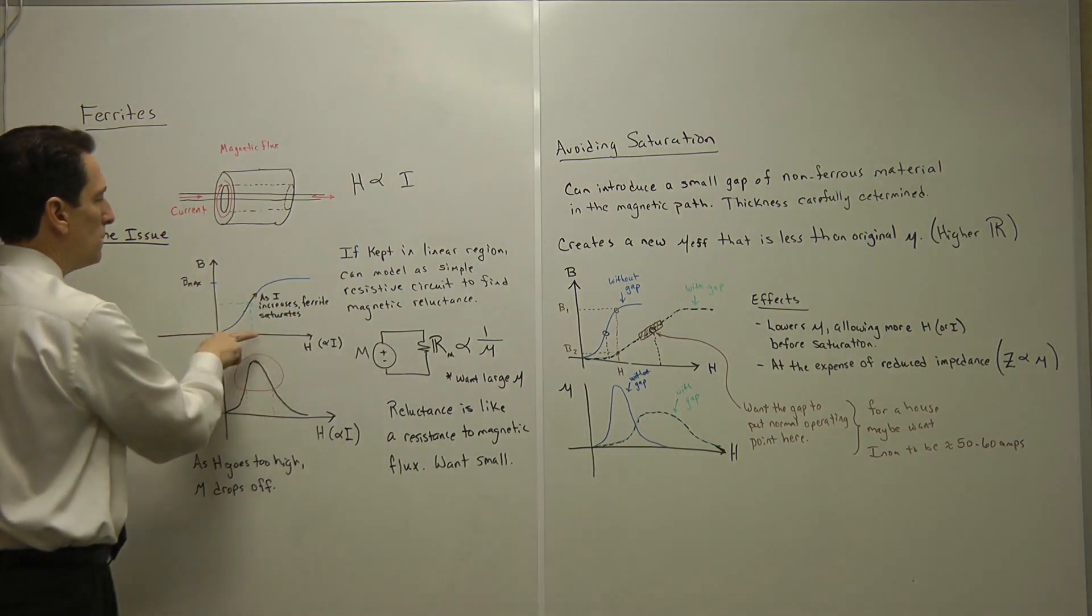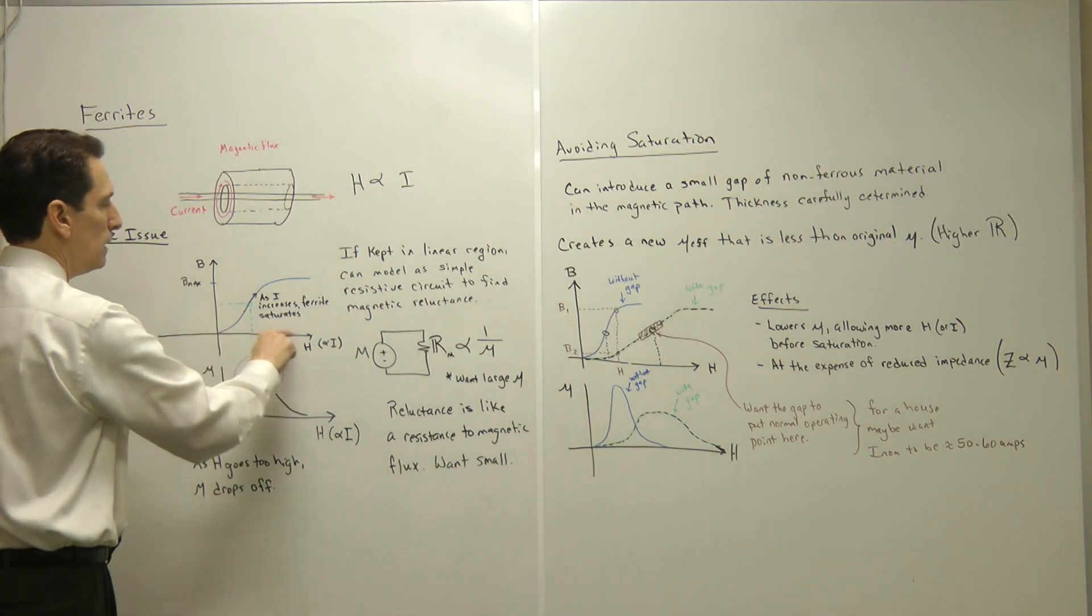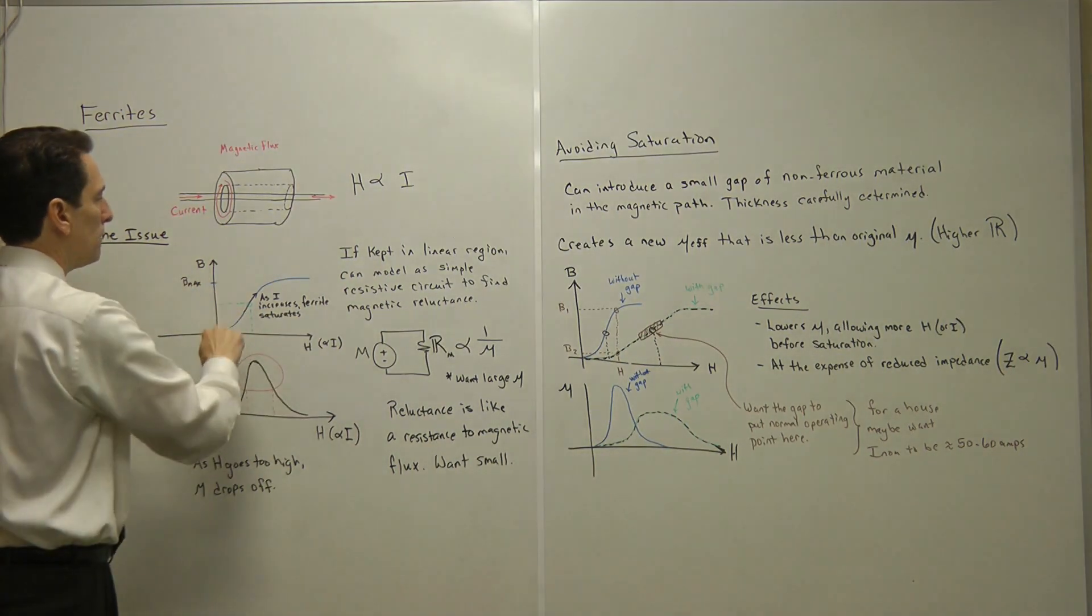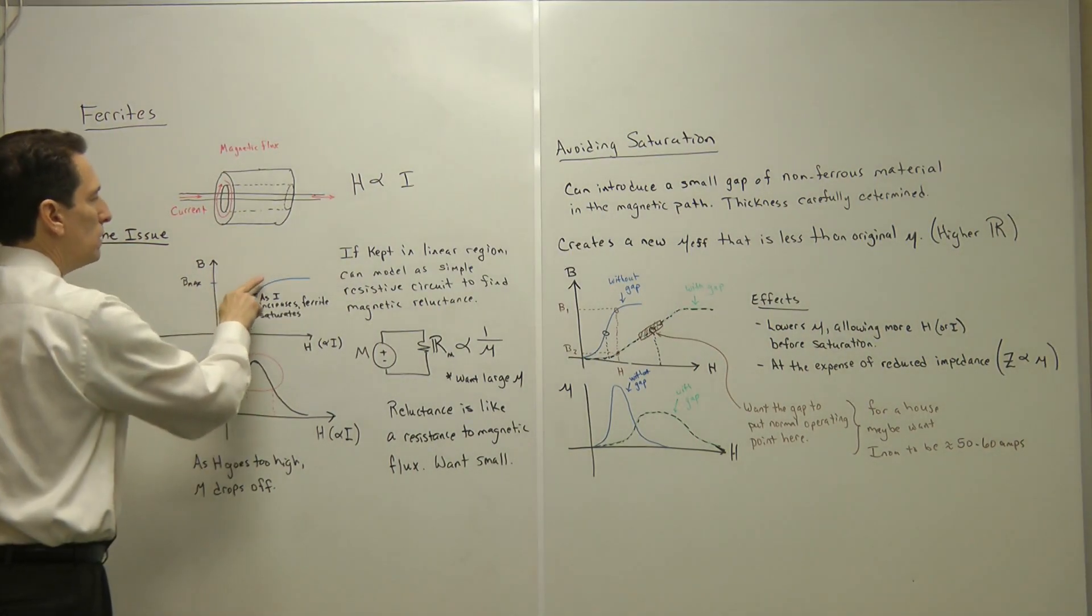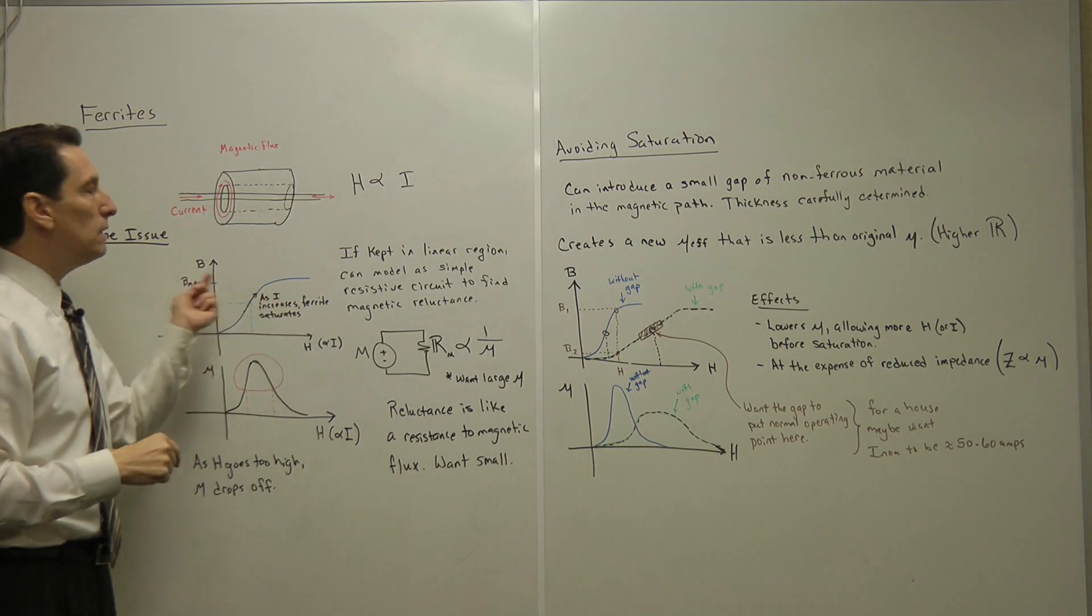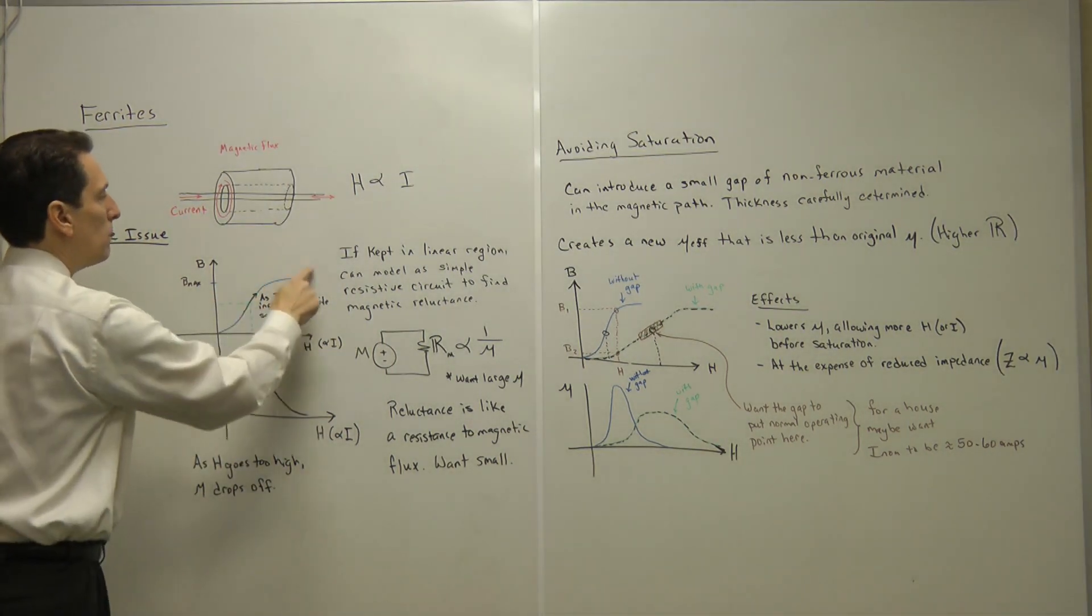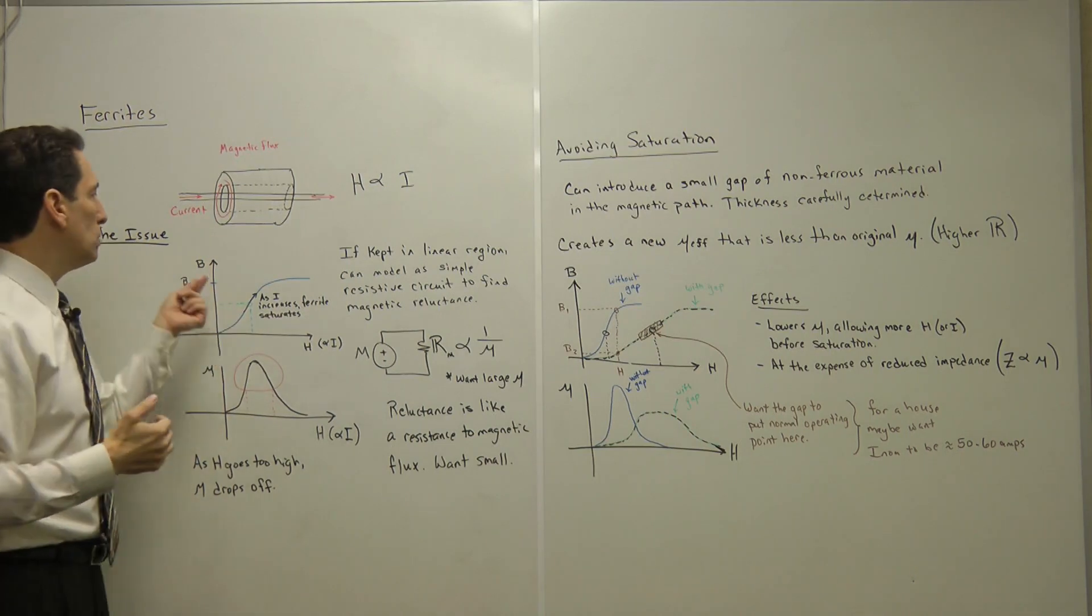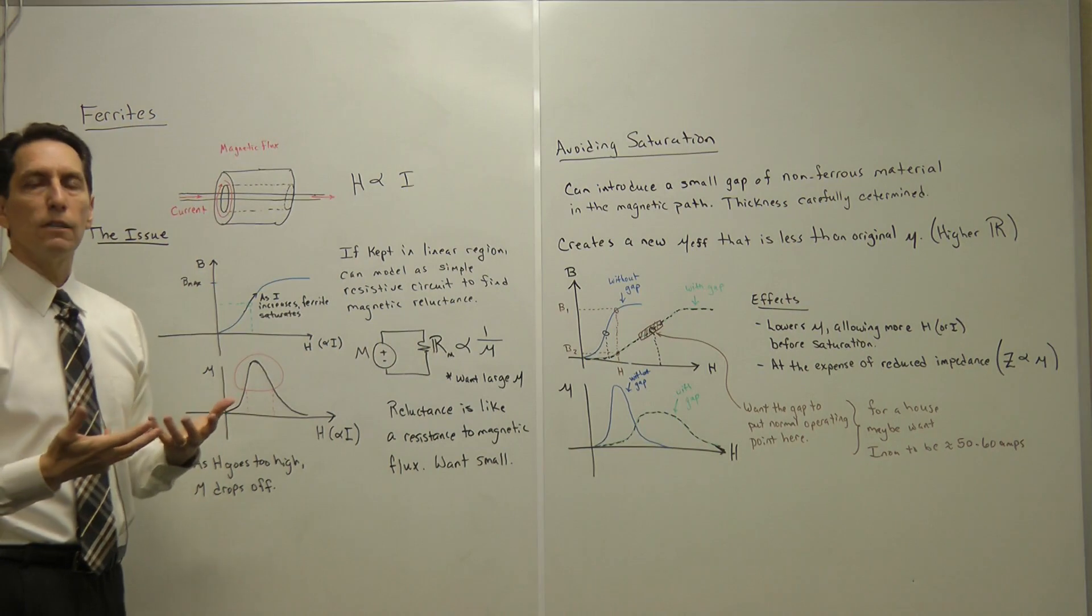What it shows is that as the current goes up, and of course that's proportional to the magnetic field, as it increases, so does the magnetic flux density. But only to a certain point. At a certain point, it starts to increase less and less, and eventually it doesn't increase at all anymore, even though you're putting more and more current. This region up here where you're no longer getting the change in the magnetic flux density that you once were, that's the region of saturation.